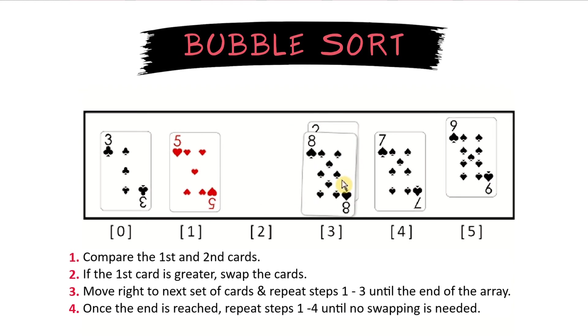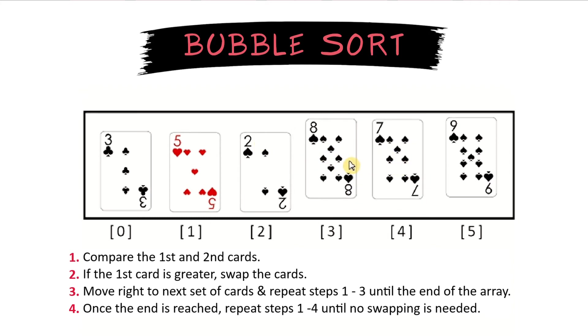But the 8 and the 2, since 8 is larger than 2, we move and swap those 2 cards. Move to the next pair. Since 8 is larger than 7, we swap again. And now 8 is sorted in the correct order, and 8 and 9 are sorted.